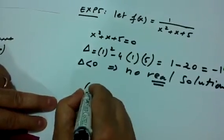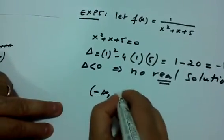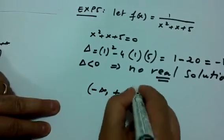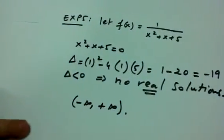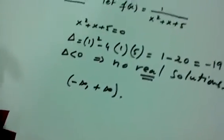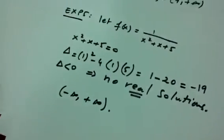If there are no real values of x that make the denominator equal to zero, there is no problem — the domain is the set of all real numbers. Thank you.